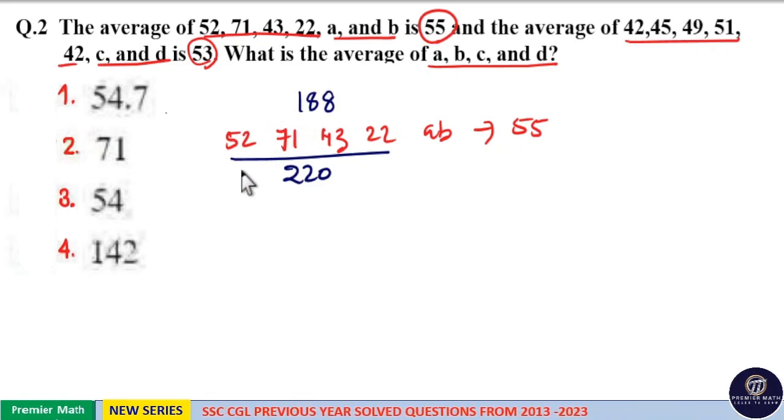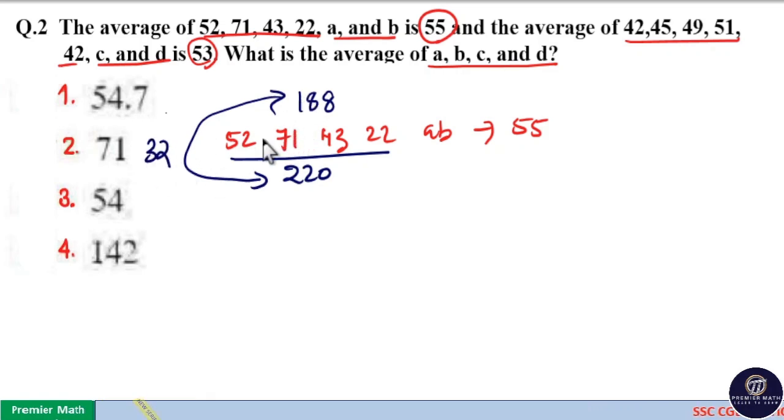Now the difference between these two: 220 and 188 is equal to 32. That is, the real sum is 32 less than the sum based on the average. So this 32 we should equally distribute to the remaining two numbers in order to balance the average of six numbers as 55.